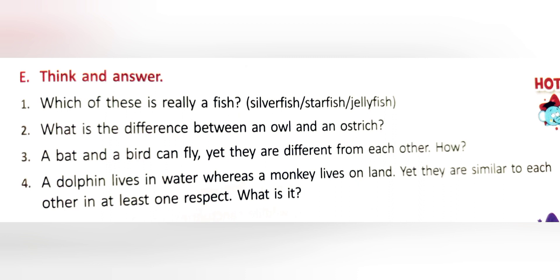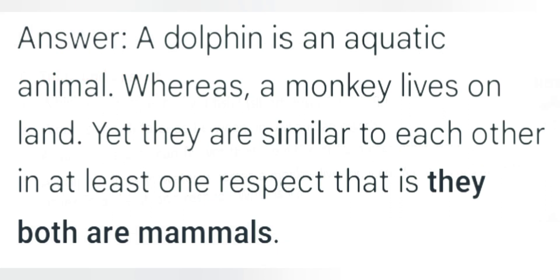Question four: A dolphin lives in water whereas a monkey lives on land, yet they are similar to each other in at least one respect — what is it? Answer: A dolphin is an aquatic animal whereas a monkey lives on land, yet they are similar to each other in that they both are mammals.